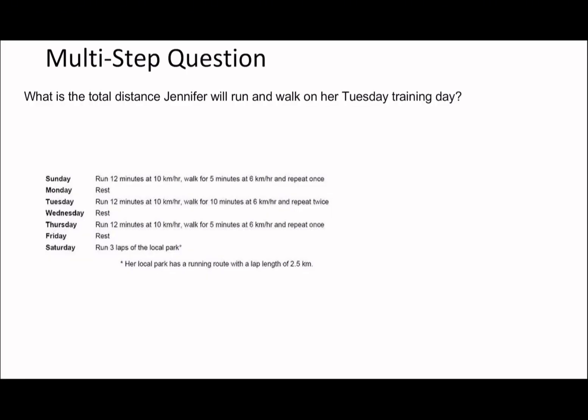Okay, so let's have a look at some of the examples here. So let's look at the first one. What's the total distance Jennifer will run and walk on her Tuesday training day? So you've got two ideas here. She runs 12 minutes at 10 kilometers per hour, walks for 10 minutes at 6 kilometers per hour and repeats twice. Okay, so this one there's kind of two ideas here.